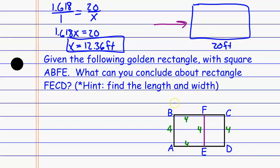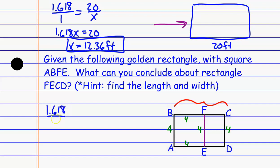Knowing the full length will help me find what FC and ED are going to be. Since this is a golden rectangle, I can set up a proportion: 1.618 compared to 1, and I'm doing long side compared to short side. The long side BC is what I'm looking for — that's x — compared to the short side of the overall rectangle, which is 4. Solving gives 1.618 times 4 equals 6.472. So the entire top side is 6.472.